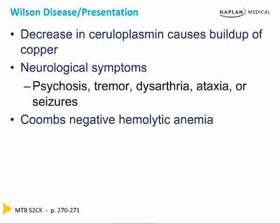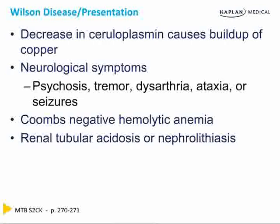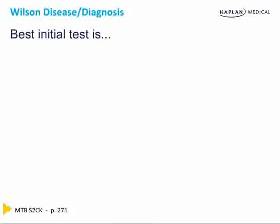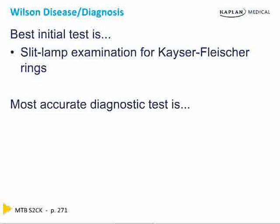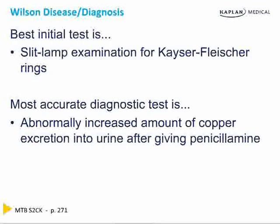You can get Coombs-negative hemolytic anemia and renal tubular acidosis or even nephrolithiasis. The best initial test is a slit lamp examination looking for Kayser-Fleischer rings. The most accurate diagnostic test is an abnormally increased amount of copper excretion into the urine after giving penicillamine.